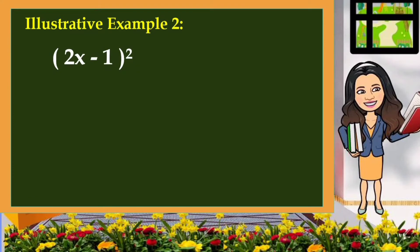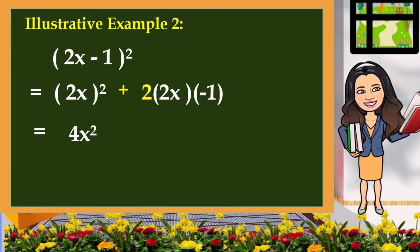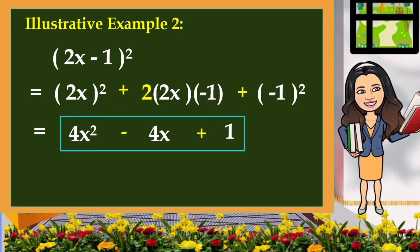Let us have another example. Given the square of the quantity 2x minus 1, we're going to use the same process. First, square the first term: 2x times 2x is equal to 4x squared. Next, twice the product of the first and last: 2 times 2x times negative 1, which is equivalent to negative 4x. Then square the last term: negative 1 times negative 1 is positive 1. So the final answer is 4x squared minus 4x plus 1.